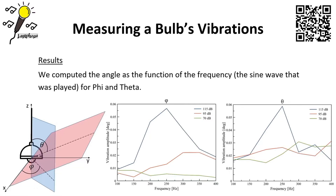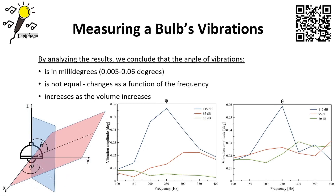From the results, we computed the angle as a function of frequency — the sine wave played — for phi and theta. We made three conclusions: first, the angle of vibration is very small, in milli-degrees; second, the angle of vibration changes as a function of frequency; and third, unsurprisingly, the angle of vibration increases as the volume increases.